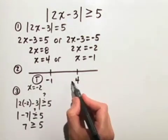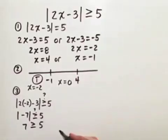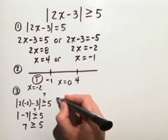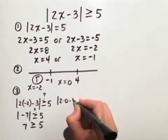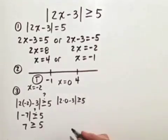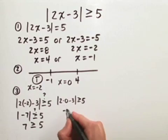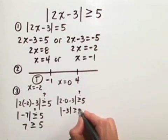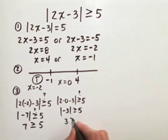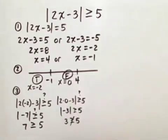Next, let's choose a value in between negative 1 and 4. I'll choose 0. Substituting into our original inequality: the absolute value of 2 times 0 minus 3 is the absolute value of negative 3, which is 3. Is 3 greater than or equal to 5? No — 3 is not greater than or equal to 5, so that's a false statement in that interval.